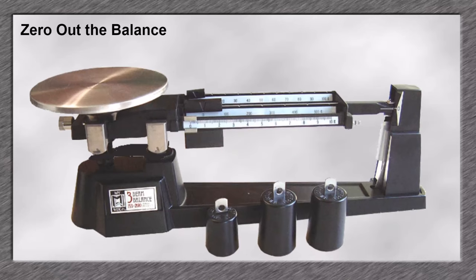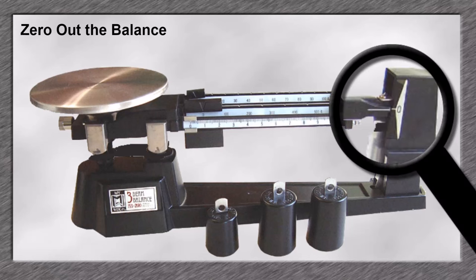A balance needs to be zeroed out. That means all of the weights need to be moved to the left side of the beams and the pointer needs to be straight. If the pointer is not straight, you would need to use the counterweight and adjust as needed.